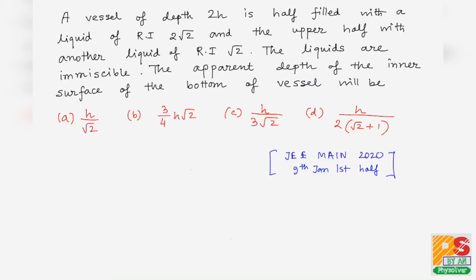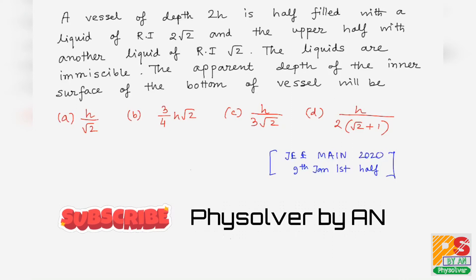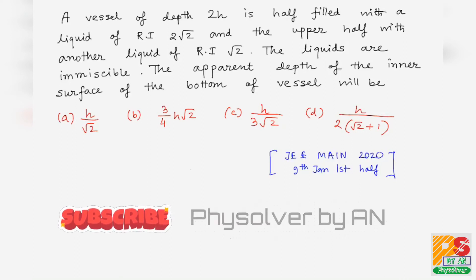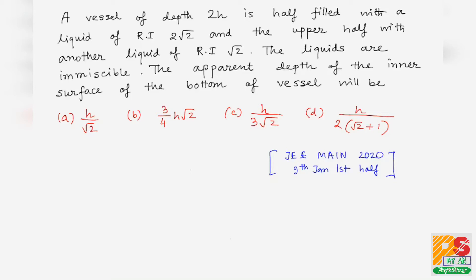Hello students. The question is: a vessel of depth 2h is half filled with a liquid of refractive index 2√2, and the upper half with another liquid of refractive index √2. The liquids are immiscible. The apparent depth of the inner surface of the bottom of the vessel will be — options are given. This question is taken from JEE Main 2020, 9 January, first shift.